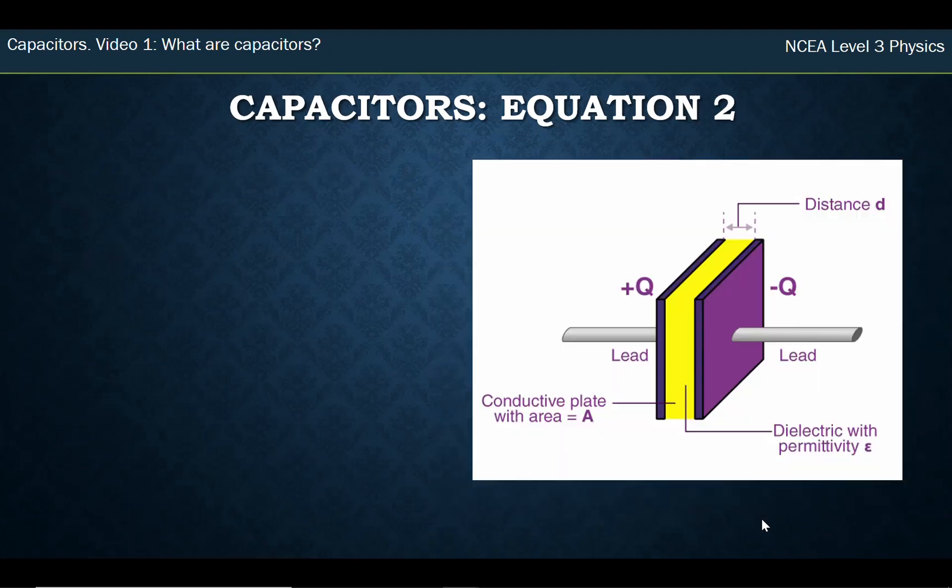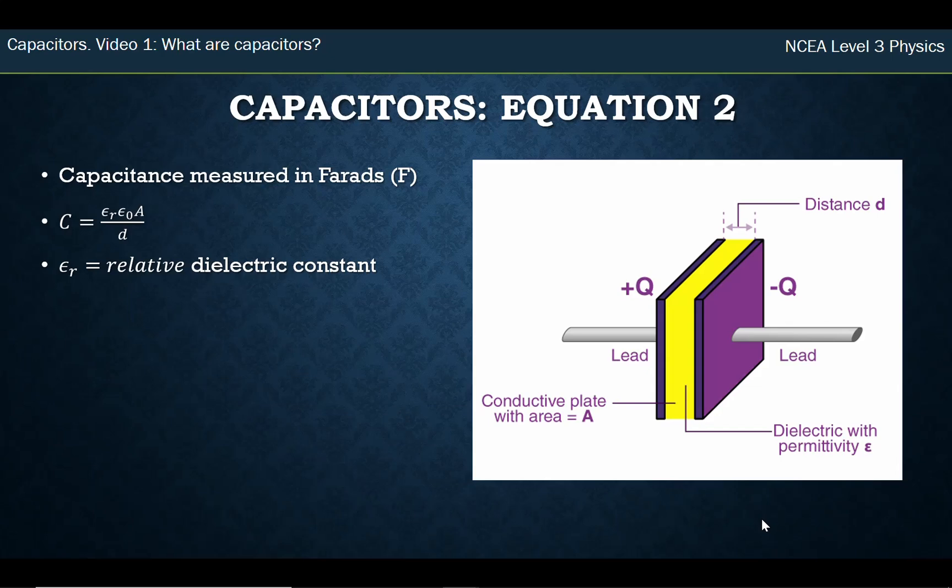The second equation deals with what makes a good capacitor. Remember, capacitance is measured in Farads, and there are a number of factors in this formula. The first one is epsilon r, the relative dielectric constant - that's how good is the dielectric compared to vacuum. Vacuum has a dielectric constant of one, and air is almost one. If you put plastic in between instead of air, that makes the capacitor four times better. If you put water in between, it makes the capacitor 80 times better, and there are different materials that are better in different cases.